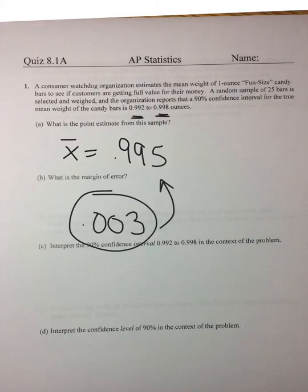So that is our margin of error. What's next? How do we say this confidence interval? We are 90% confident that the interval from 0.992 to 0.998 captures the true mean weight of the fun-size candy bars. That's how you say it.